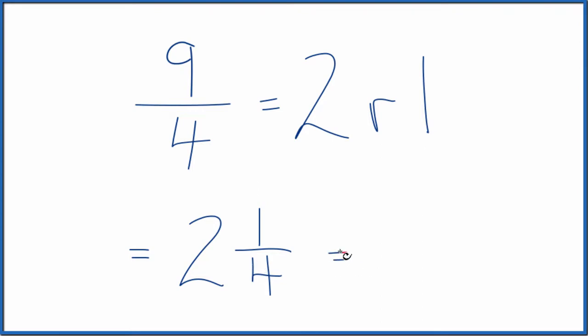And we can check this because two times four, that's eight plus one. That'll give us nine. We put that over four, the denominator, and that's what we started with.